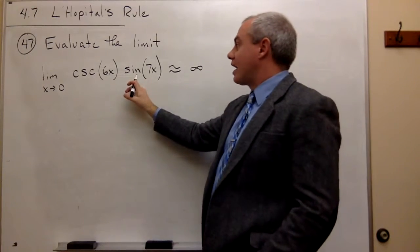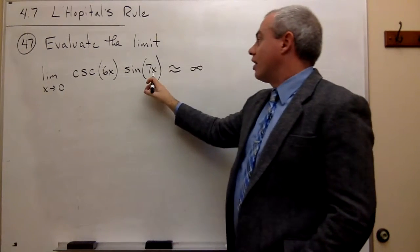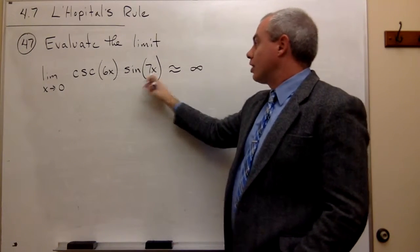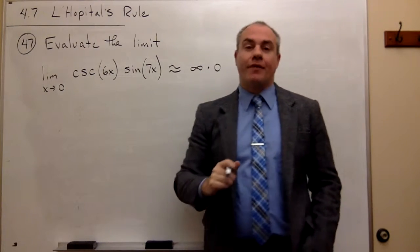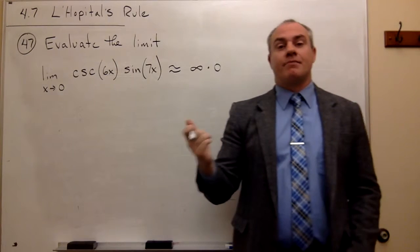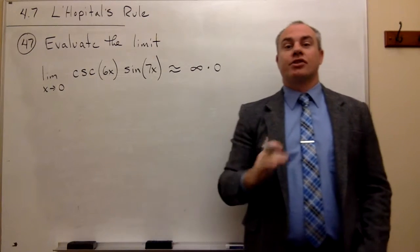What about sine of 7x? As x goes to 0, sine of 0 goes to 0. So we have the form infinity times 0, which is actually not that helpful.